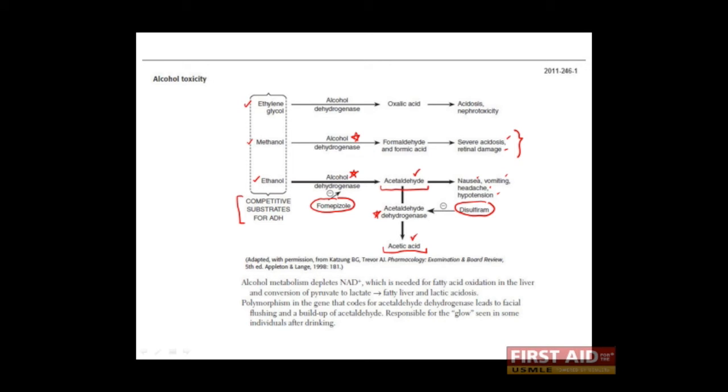Ethylene glycol is another alcohol which is used in antifreeze and gives antifreeze its sweet taste and odor. It is also metabolized by alcohol dehydrogenase, but forms oxalic acid. Oxalic acid, being an acid, can result in metabolic acidosis, and the acid itself can crystallize in the urine, which results in kidney damage, or nephrotoxicity.